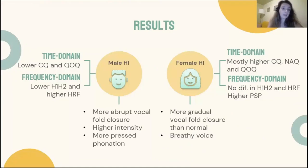This shows the overall picture for the two genders. For male hearing impaired speakers, significantly lower values in time domain parameters, as well as lower H1-H2 and higher HRF, were found — indicating more abrupt vocal fold closure, higher intensity, and more press phonation. For female speakers with hearing impairment, significantly higher values than normal in time domain parameters and higher PSP were located, suggesting more gradual vocal fold closure and breathier voice.